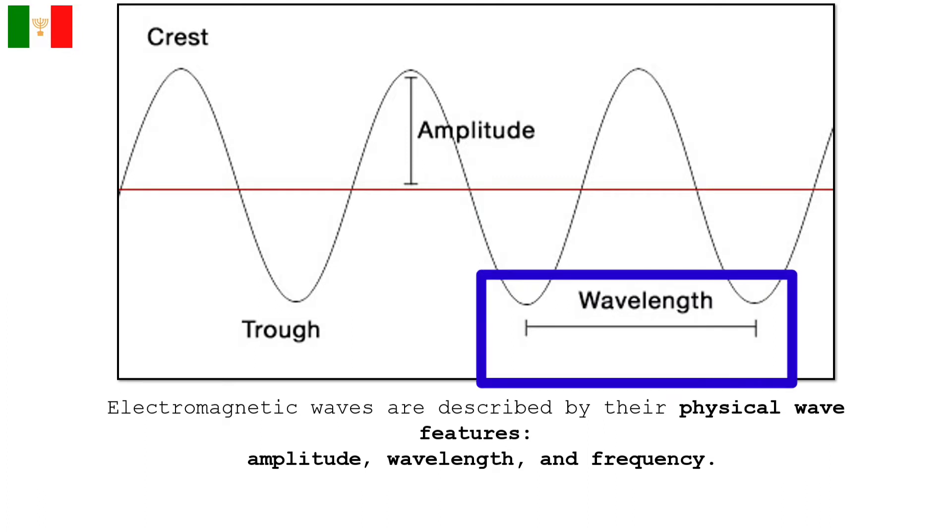Wavelength can be defined as the distance between two successive crests or troughs of a wave. It is measured in the direction of the wave. This means the longer the wavelength, the lower the frequency. In the same manner, the shorter the wavelength, the higher will be the frequency.